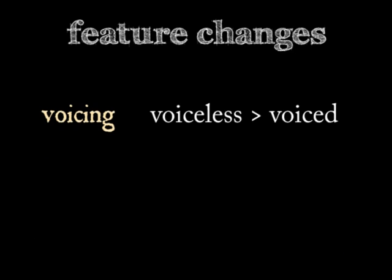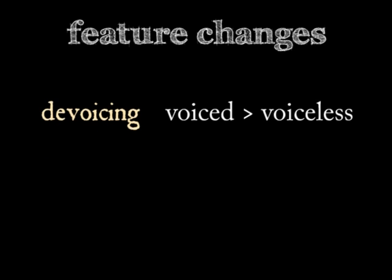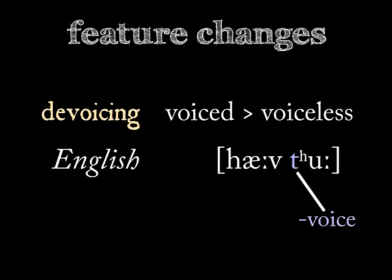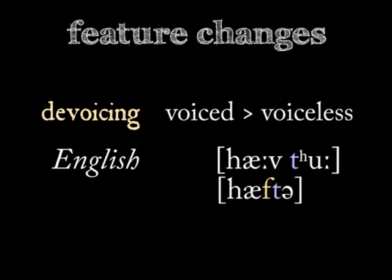If the assimilated phoneme is voiced and picks up the feature 'voiceless' from the other sound, or from being at the end of a word, that's the opposite phenomenon, called devoicing. The word 'have' ends in the voiced phoneme V; the word 'to' begins with the voiceless T. Some speakers devoice V to F when they pronounce the expression 'have to' as 'hafta.'